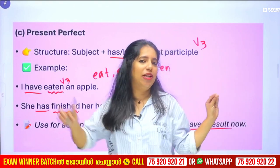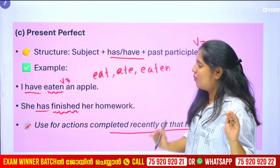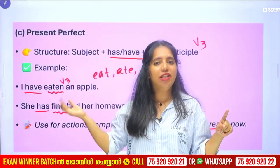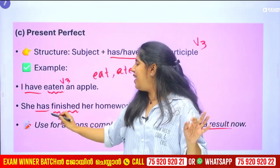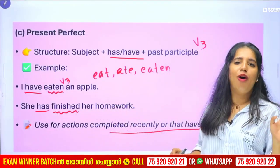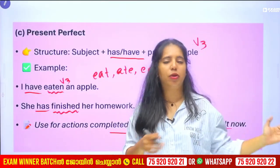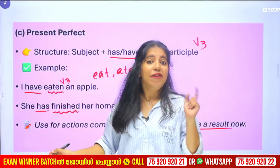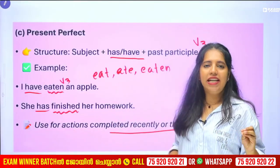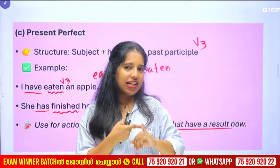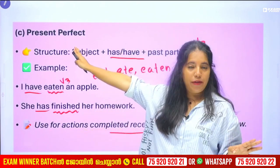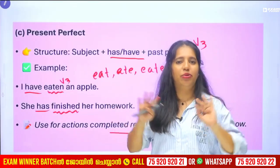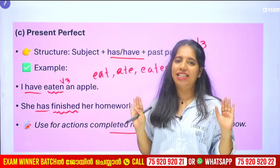What is the present perfect used for? I have eaten an apple. She has finished her homework. We use have or has plus the V3 form. That is the present perfect — recently completed activities with a result in the present.